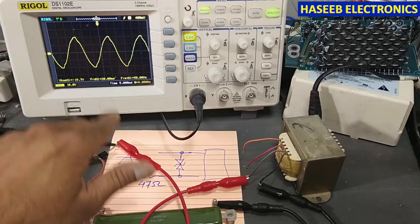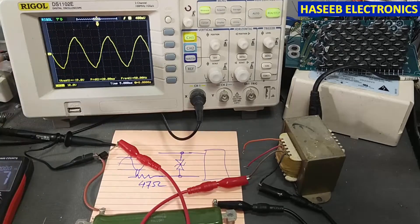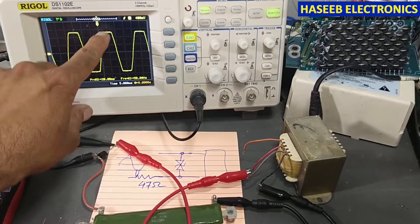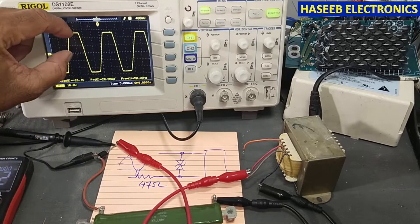But if you apply voltage more than its rated value, it will clip the upper signal and lower signal, allowing only 22 to 22.5 volts AC to pass to the next circuit. Let's perform this test.